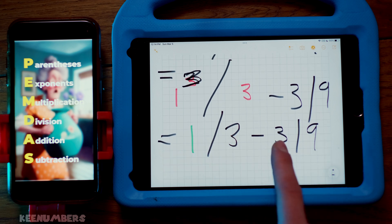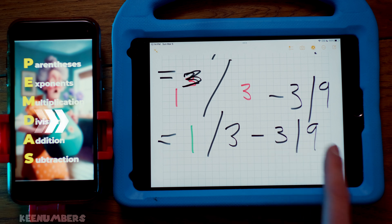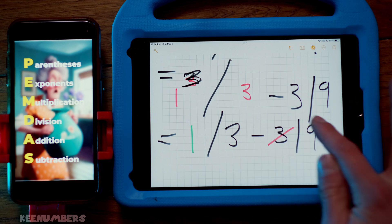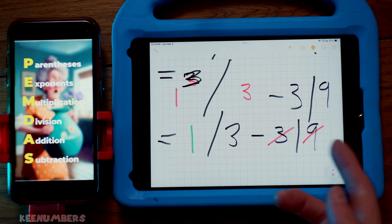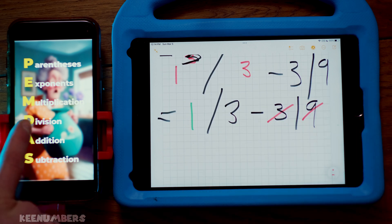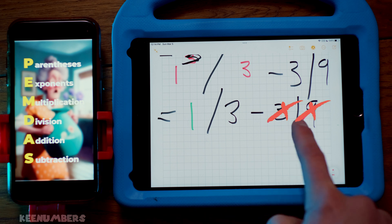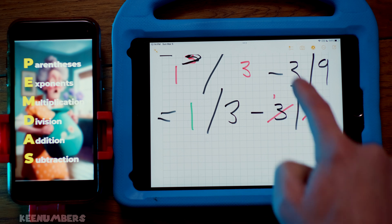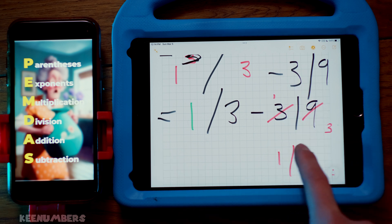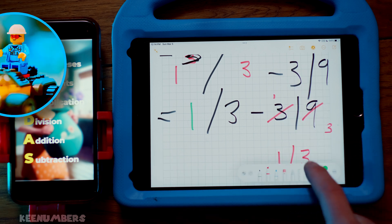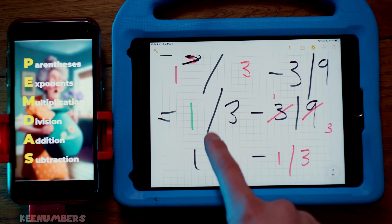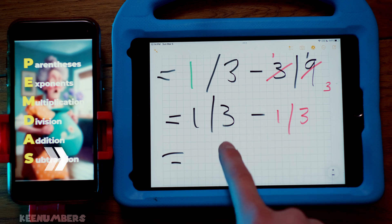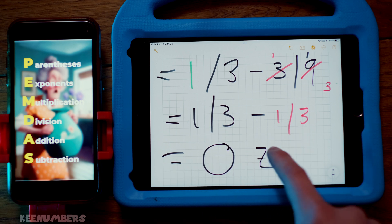3 divided by 9. Hey, the greatest common factor here is 3. That's great news. There's no multiplication to be had here, so we're jumping straight to division. And the greatest common factor here being 3 means we're going to have a 3 left over here and a 1 right here. So what is this tantamount to? Or in other words, what is this equal to? This is simply 1 third minus 1 third. But any number minus itself is a big ol' whopping zero.